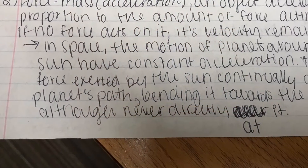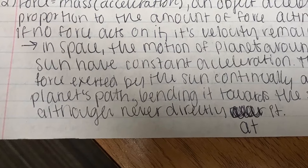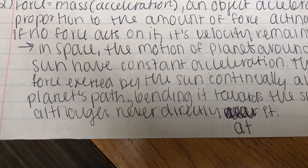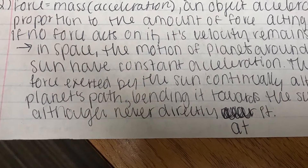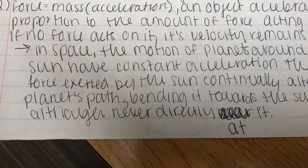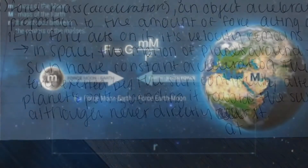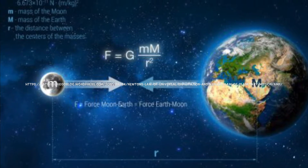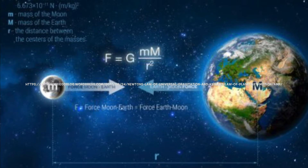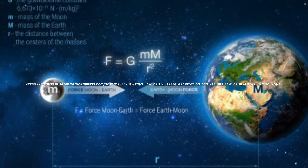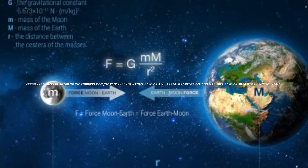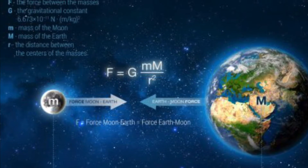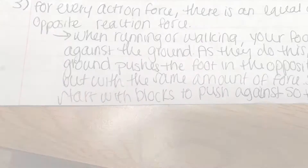Still with the second law, in space the motion of planets around the Sun have constant acceleration. The gravitational force exerted by the Sun continually alters a planet's path, bending it towards the Sun, although never directly at it, in a circular orbit.